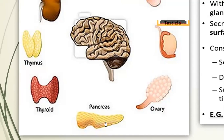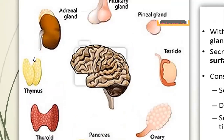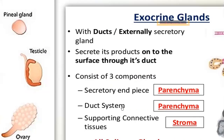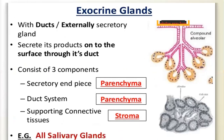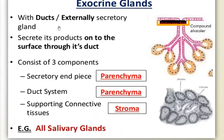Then there is the pancreas, which produces two different hormones - we will discuss those in future lectures. The thyroid gland is also a very important gland whose secretions we will also discuss. There is also the thymus. These glands all produce certain chemicals from their cells into the blood. Exocrine glands have ducts and secrete their product onto the surface through those ducts.